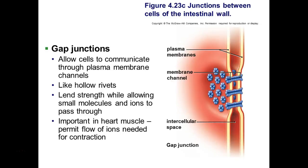Then there are gap junctions. Gap junctions allow cells to communicate through little channels — like hollow rivets — through which materials can pass. They provide strength but allow small molecules and ions to pass through. This is important in heart muscle because it permits the flow of ions needed for nerve conduction and the contraction of the heart.